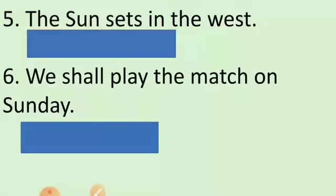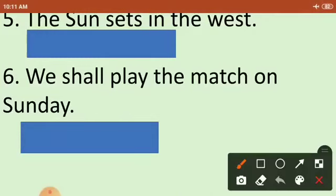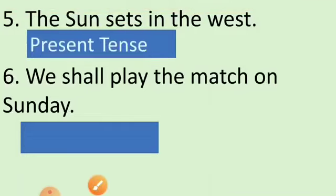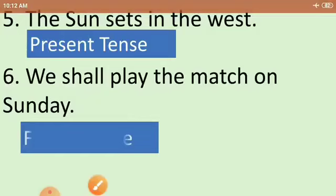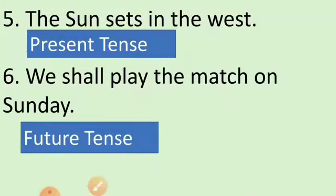Next question, fifth: The sun sets in the west. The action word is 'sets,' and it is in present tense. Sixth question: We shall play the match on Sunday. The action word is 'shall play,' and it is in future tense — very simple to identify the tense.